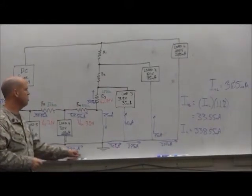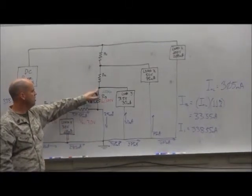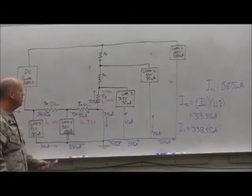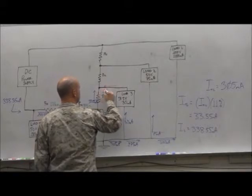Okay, back over to the bleeder resistor, R3. We had 33.55 milliamps going into this node. Is that the only current going to that node? No. We also had 30 milliamps coming from load 3.